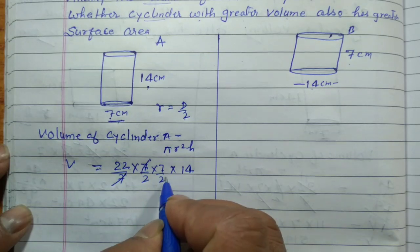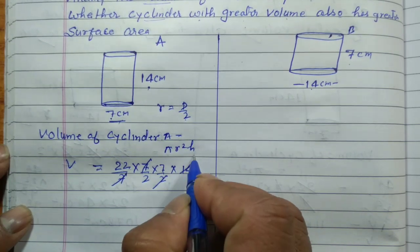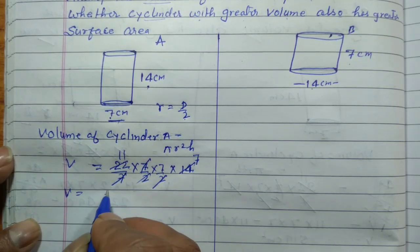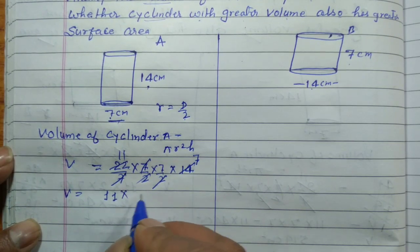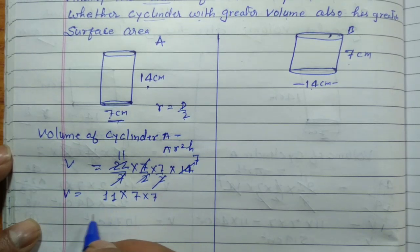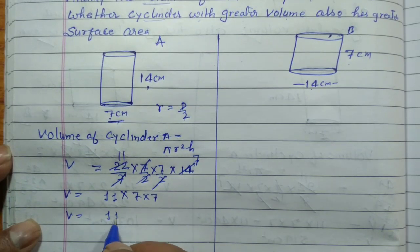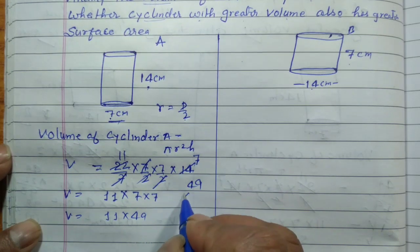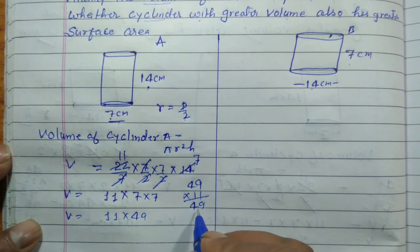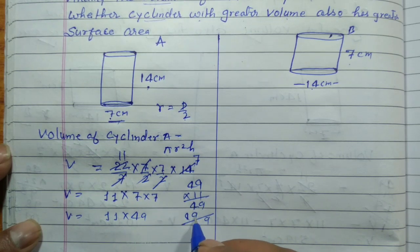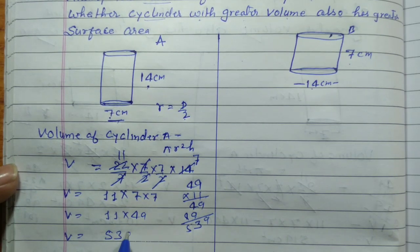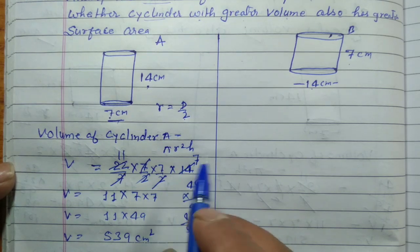7 से 7 cancel हो जाएगा, और 2 से 14 cancel होकर 7 आएगा। तो volume = 11 × 7 × 7 = 11 × 49 = 539 cm³, क्योंकि यह सब centimeter में है।